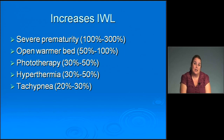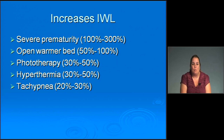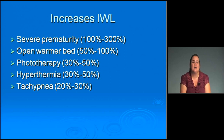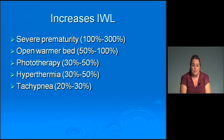What causes increases in insensible water loss? Severe prematurity is the number one factor — it can increase water loss up to 300%. An open warmer bed can be up to 100%. Phototherapy accounts for 30 to 50% increased insensible water loss. Hyperthermia accounts for 30 to 50%, and tachypnea 20 to 30% — the more they breathe out, the more water loss increases.